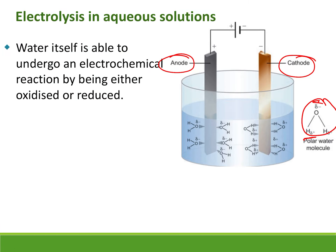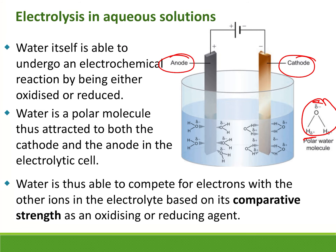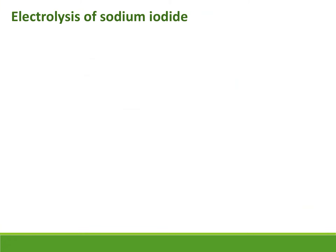Water is very special — it can either be reduced or oxidized, depending on what other substances are present in the solution, or if we simply want to pass a current through water to create oxygen and hydrogen. Whether water is oxidized or reduced depends on the comparative strength of the other substance in the solution — just like with acids and bases, it depends on the other things.